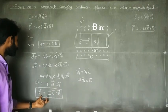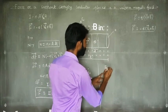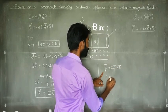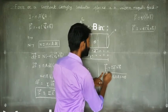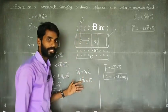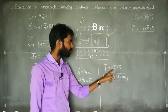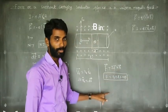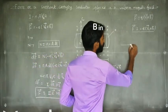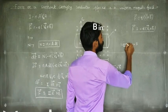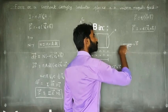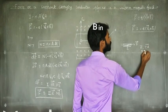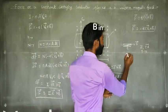Now for some special cases — this equation is in vector format. What is the magnitude format? F vector equals I times L vector cross B vector, so the magnitude is: F equals BIL sin theta. This is a very important condition. Here the modulus of IL vector, modulus of B vector, gives BIL sin theta. Theta is the angle between IL and B. Suppose the magnetic field is in the same direction as the current direction — theta equals zero.